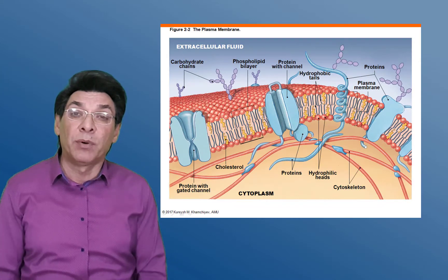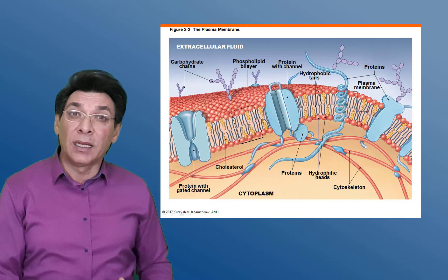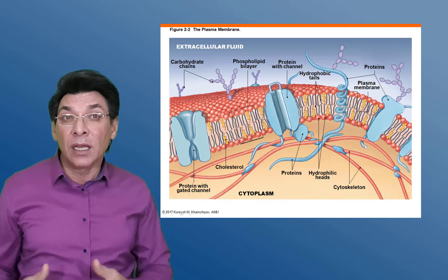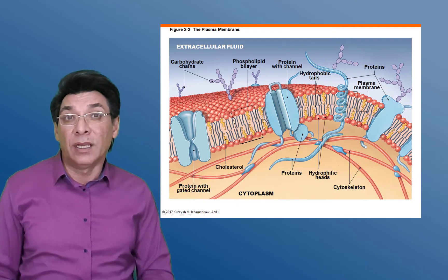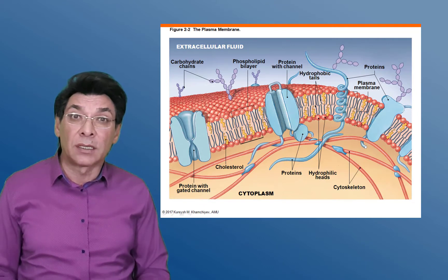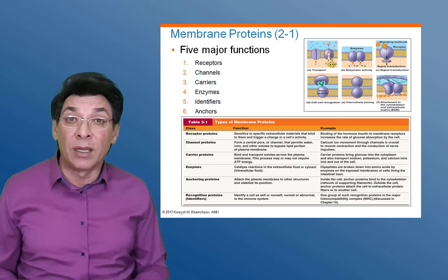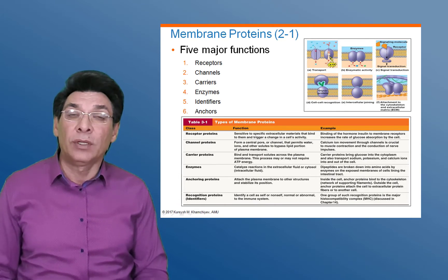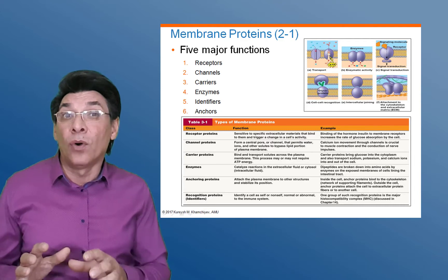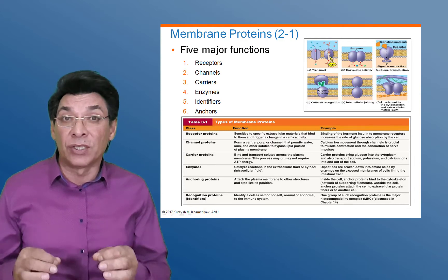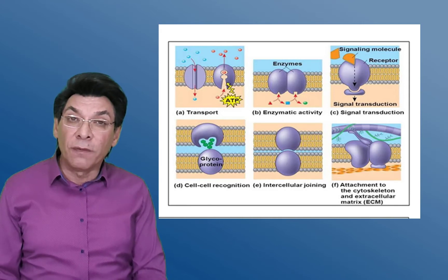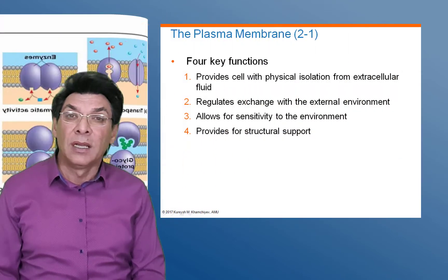The phospholipid bilayer of the plasma membrane is arranged with one surface facing the extracellular fluid, or outside of the cell, and the other surface facing the intracellular fluid, or inside of the cell. There are various proteins embedded, and some proteins span the entire membrane completely — these are integral proteins — and can act as transporters. Others are located on one side only and do not span the entire membrane; they are called peripheral proteins.